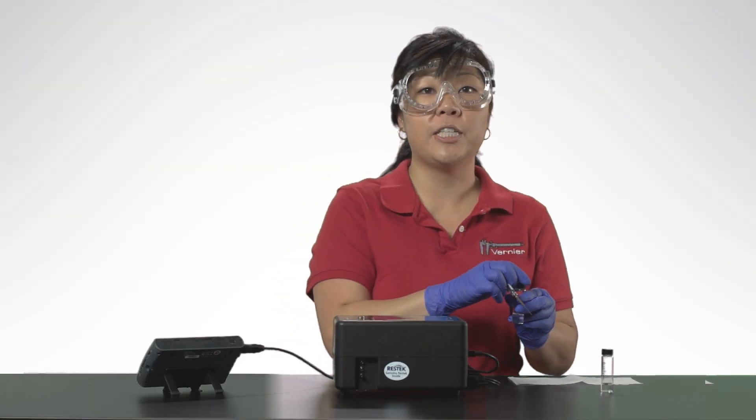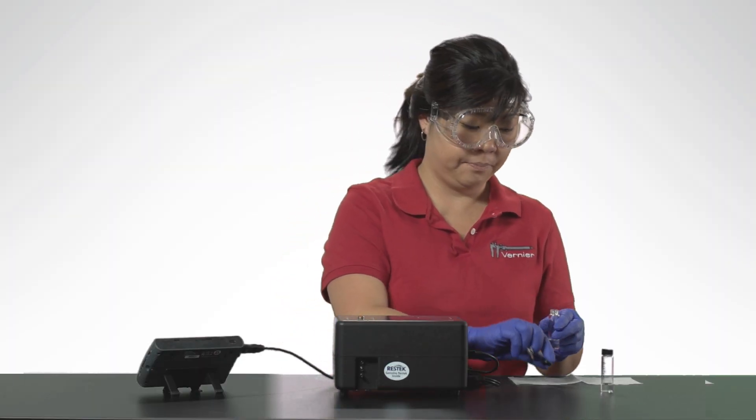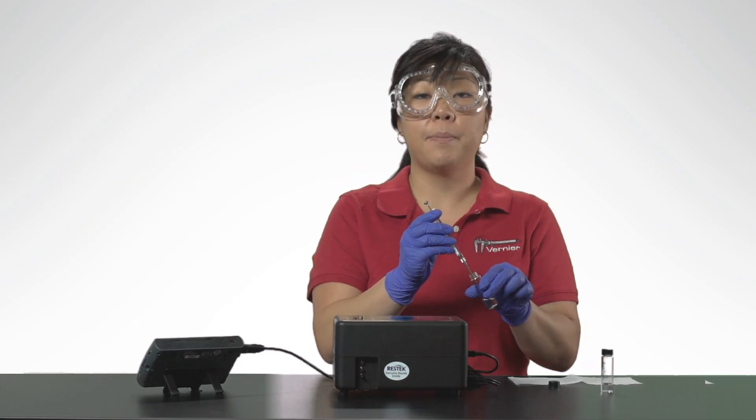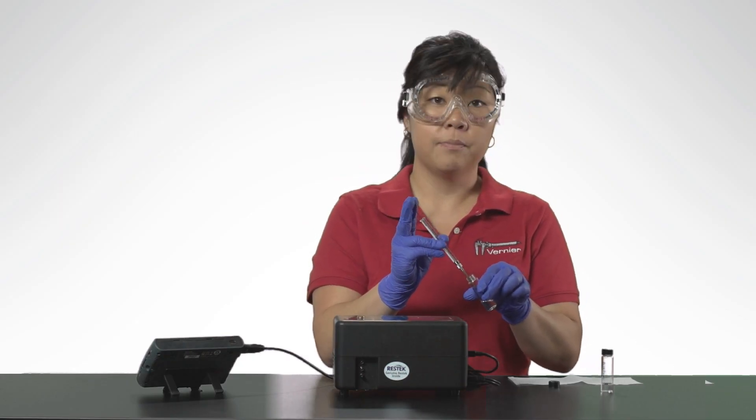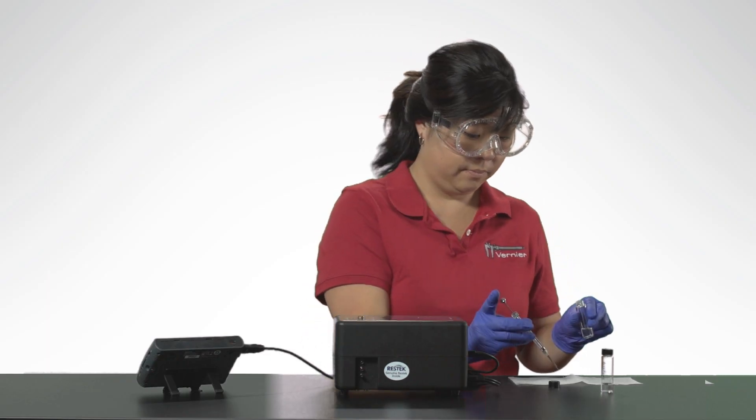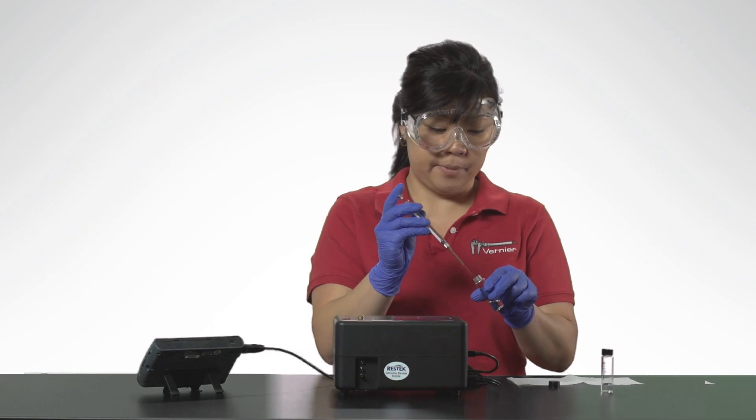Submerge the tip of the needle into the vial containing the sample. Pull back the plunger to fill the barrel about one third full. Expel the liquid onto a paper towel. Repeat this process two more times.